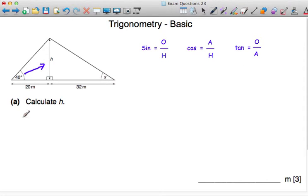So we write tan of 40 degrees is equal to opposite over adjacent, which is h over 20. Now to find h, all I have to do is multiply through by the 20. So we get 20 tan 40 degrees is equal to h, and then we can use the calculator to find h.